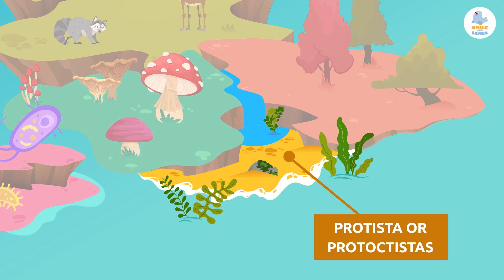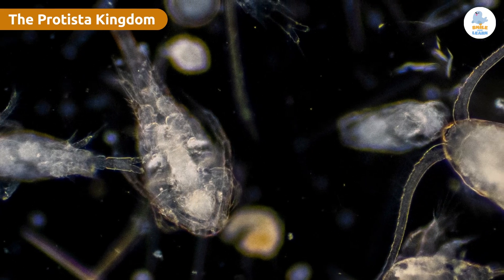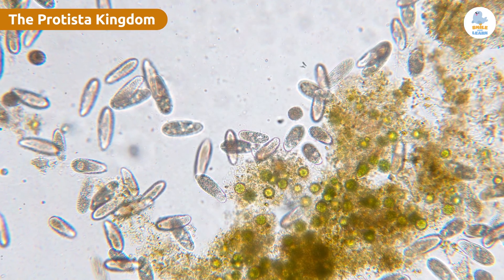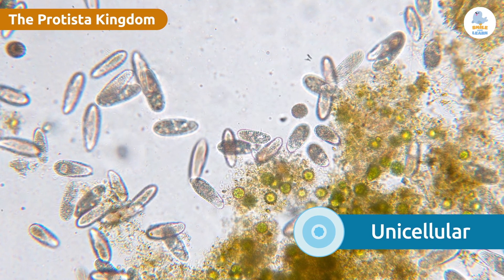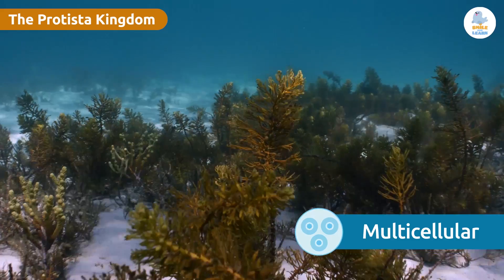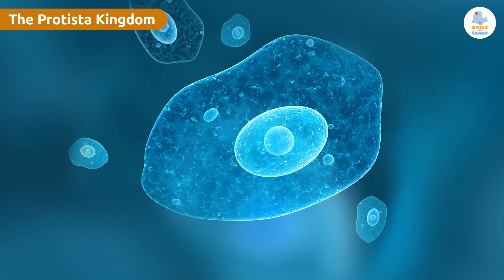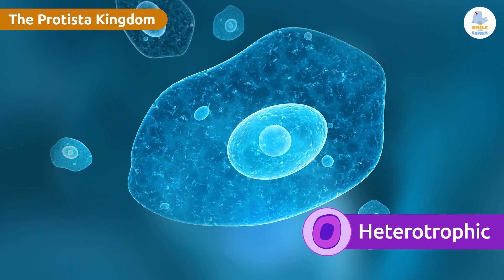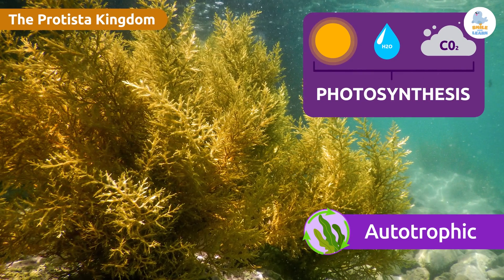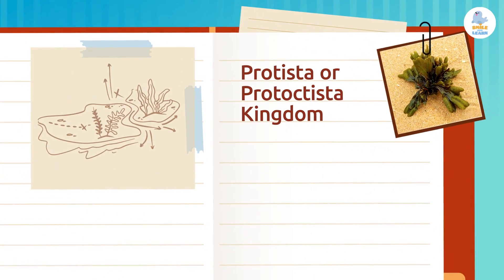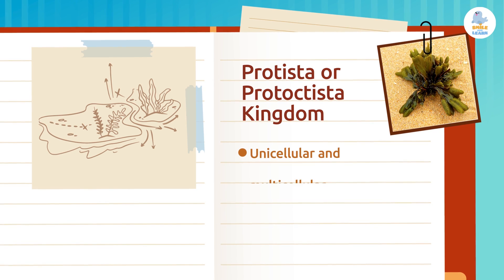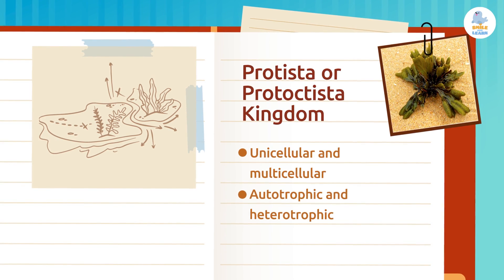Finally, the protista kingdom — also called the productista kingdom — includes protozoa and algae. The organisms in this kingdom can be unicellular, like protozoa and some types of algae, or multicellular, like many other types of algae. Both types are only visible through a microscope. In this kingdom we find heterotrophic beings like amoeba that eat other organisms, and also autotrophs such as algae that make their own food using photosynthesis. The characteristics of the protista kingdom are: they can be unicellular or multicellular, and autotrophic or heterotrophic.